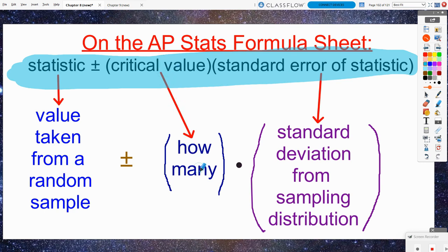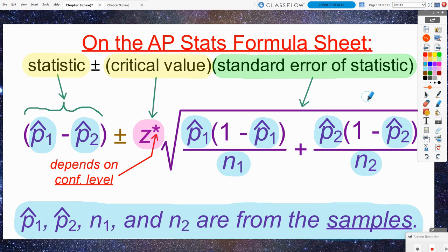The critical value represents how many standard deviations do we want, depends on that confidence level specifically. The standard error of the statistic is basically our standard deviation. But things look a little different when it's the difference of two proportions. Instead of just having p̂ for our statistic, it is the difference of our sample proportions. The one and the two kind of depends on which way you want to subtract. Do you want to do juniors minus seniors or seniors minus juniors? Doesn't matter which one you do, it's going to lead us to the same exact results.